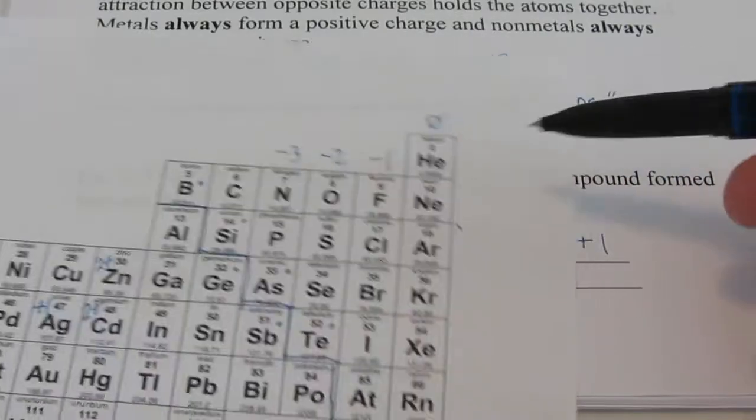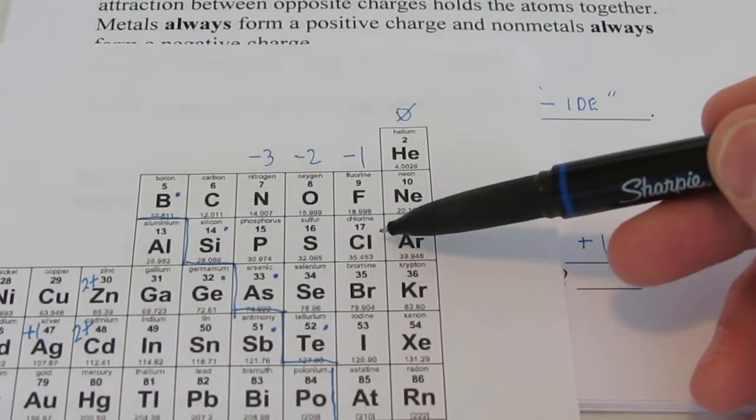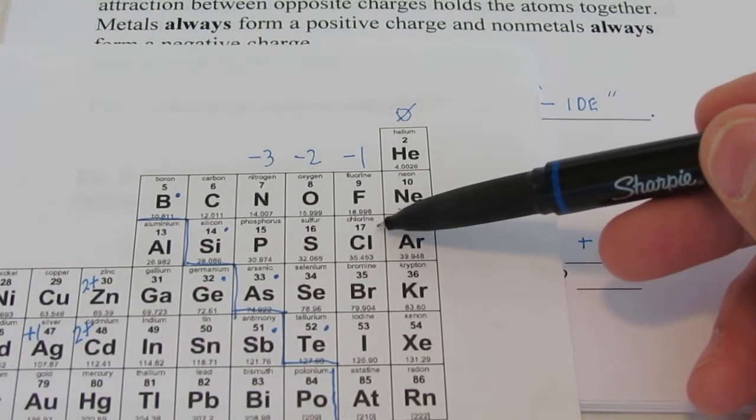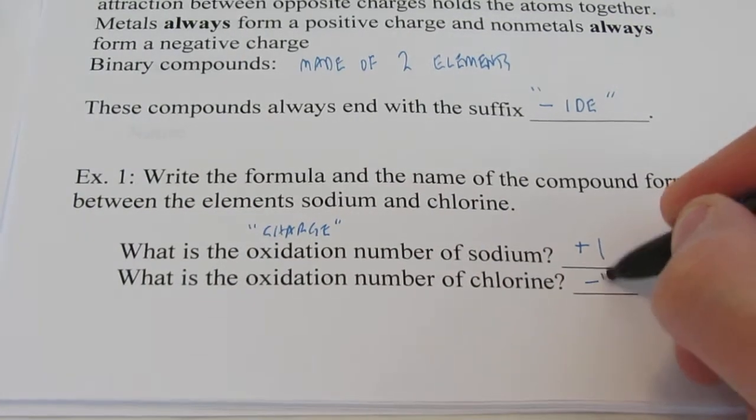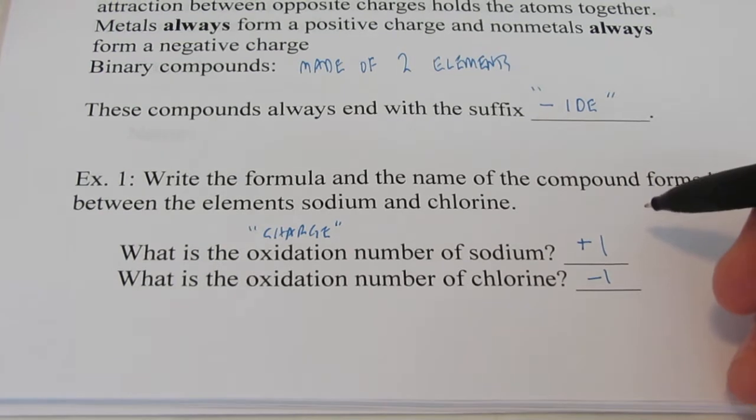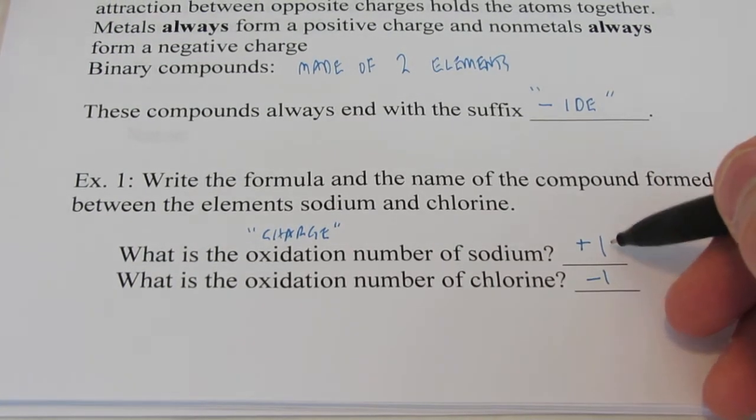And chlorine, when it forms an ion, while chlorine has 17 electrons, that's not stable, it's going to gain one to attain a noble gas configuration. So it's negative one.